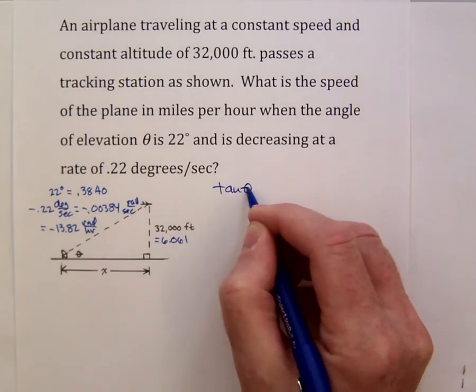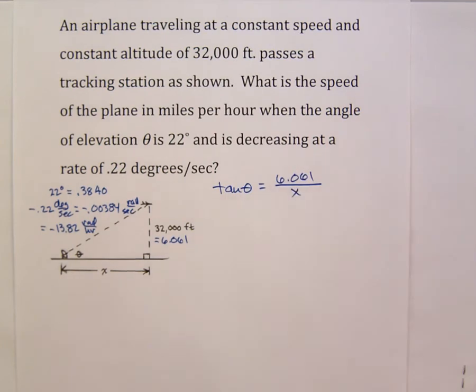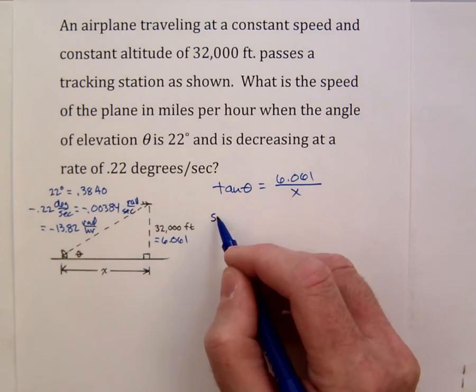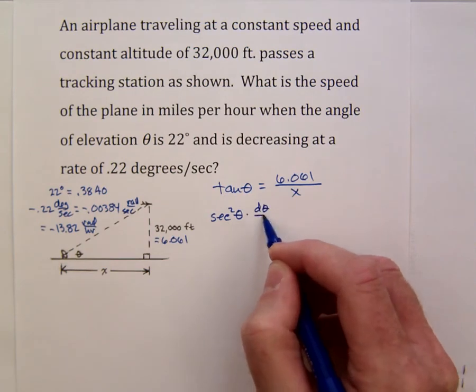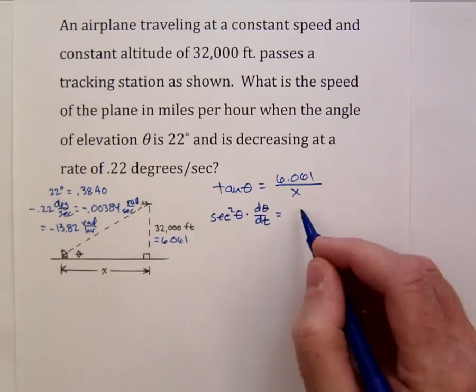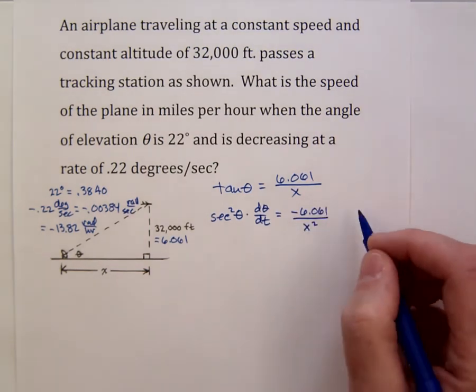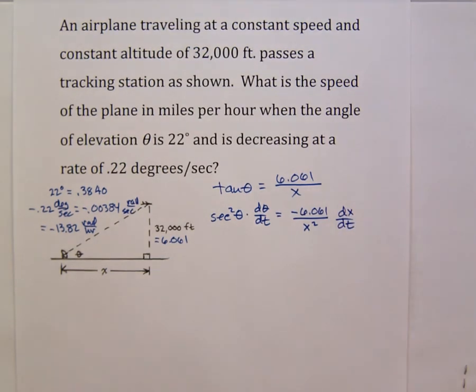And since we know the height of this triangle the tangent seems appropriate. So we could say tangent of theta equals 6.061 over x. And we need to treat both theta and x to be functions of time which of course they are. And so if we differentiate using the chain rule we get that the secant squared of theta times d theta dt equals negative 6.061 over x squared times dx dt.